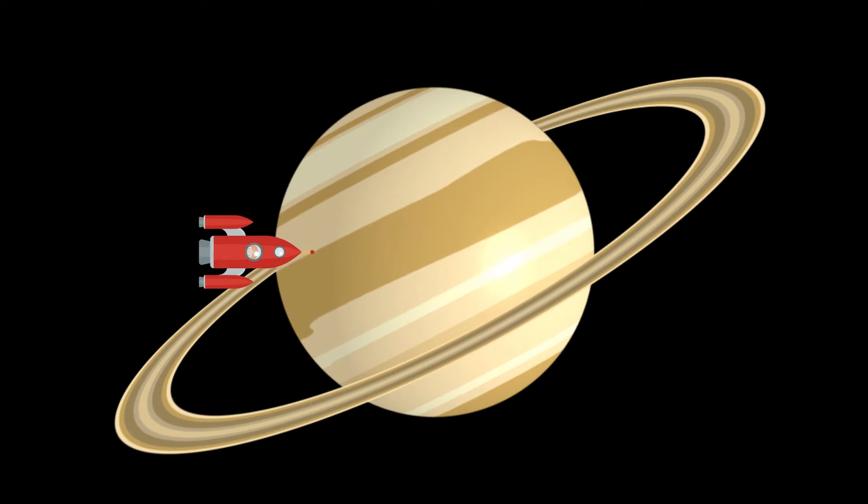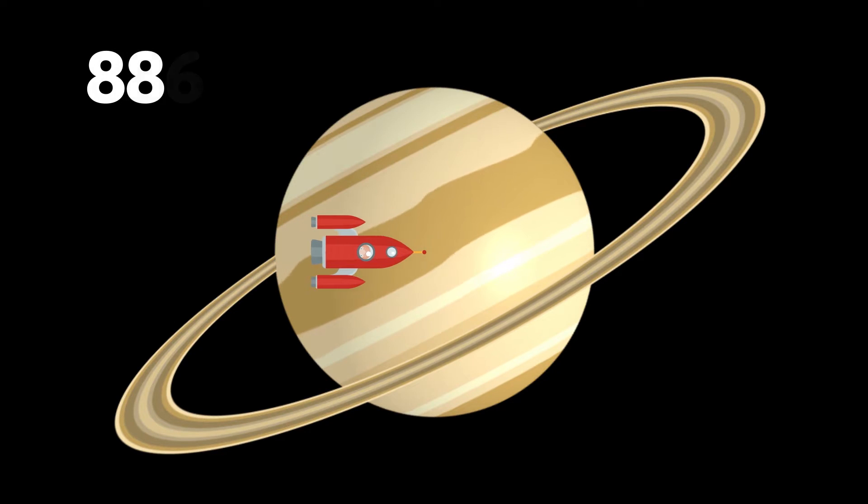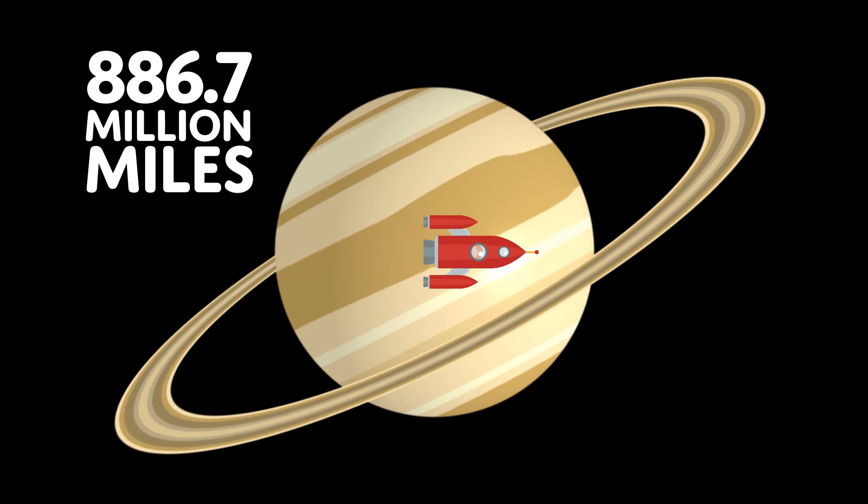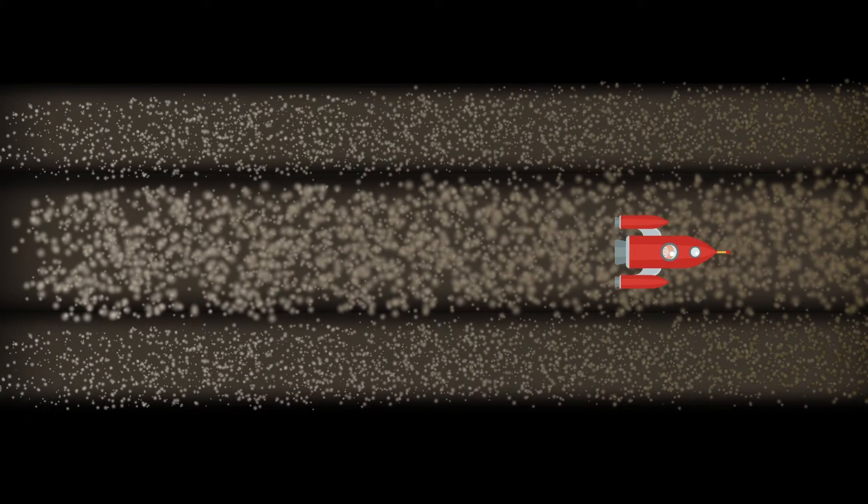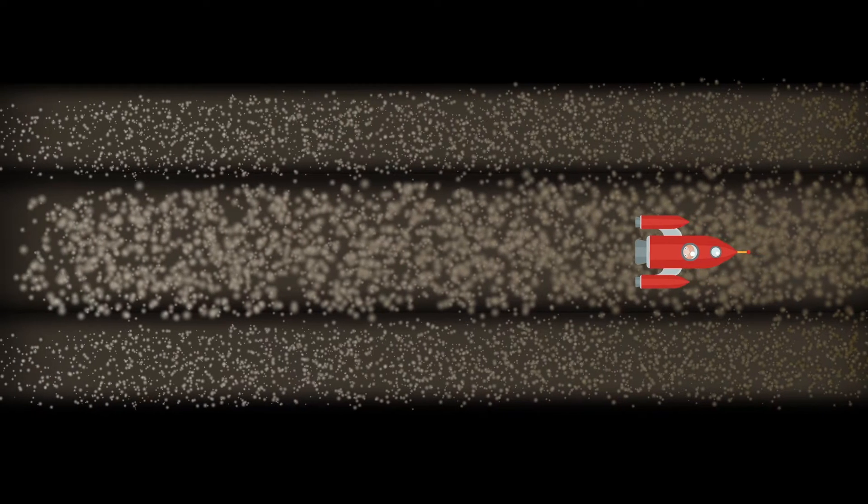The sixth planet is Saturn. It is 886.7 million miles from the sun. It is the second largest planet in the solar system. It has a large ring system around it made of ice and rock.